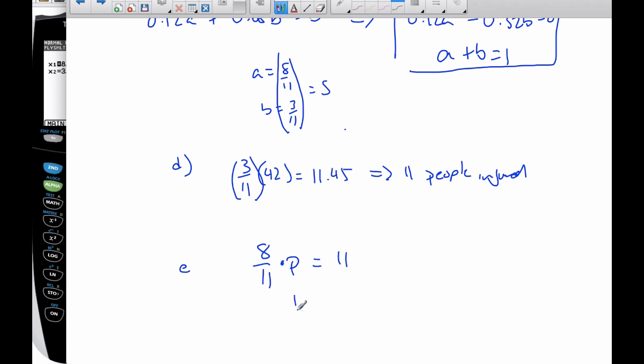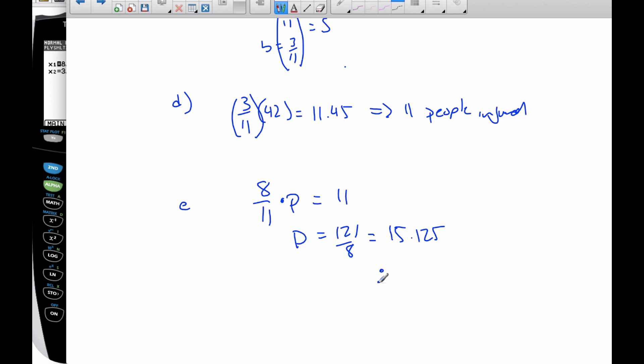And so then I solve for P. I get P is equal to 121 over 8 by multiplying by 11, divided by 8, and this is 15.125. That means, therefore, Oscar needs 16 players to ensure he's got a full team. So he should recruit 16 players in total.